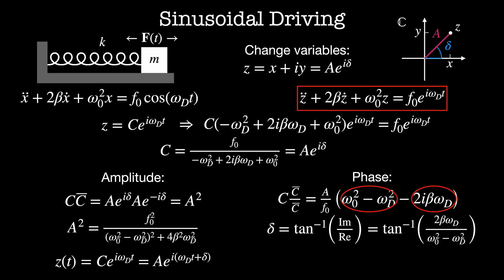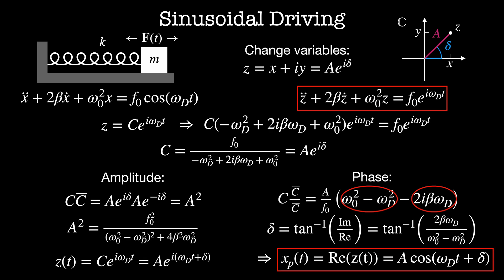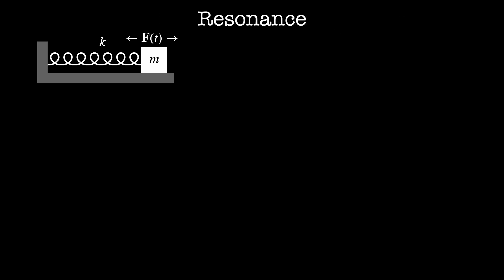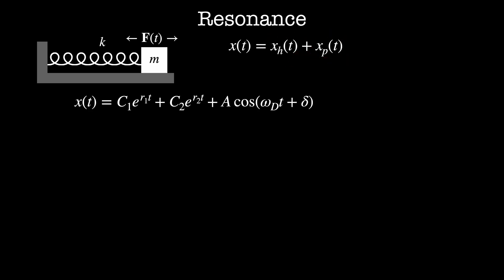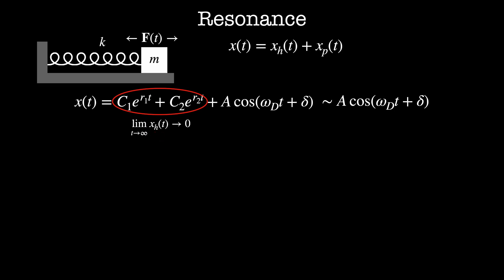Combining this, z equals c e to the i omega_d t equals a e to the i times omega_d t plus delta. The particular solution is the real part of z, which equals a times cosine of omega_d t plus delta. The full solution is the homogeneous solution plus the particular solution. The homogeneous solution has the form c1 e to the r1 t plus c2 e to the r2 t — both terms decay exponentially. At long times the homogeneous solution decays to zero, so the trajectory just looks like the particular solution.